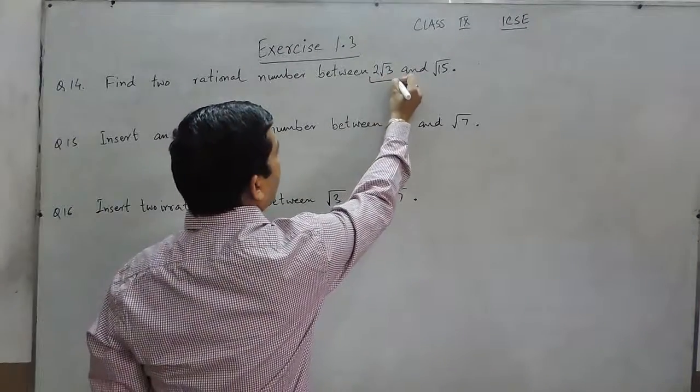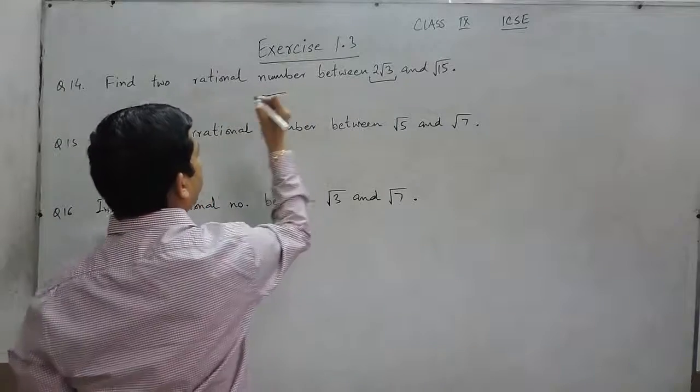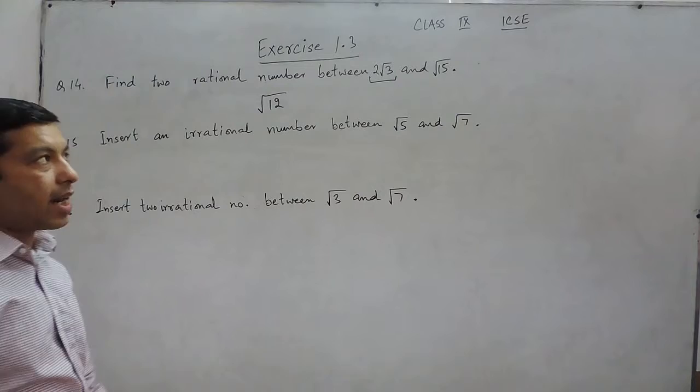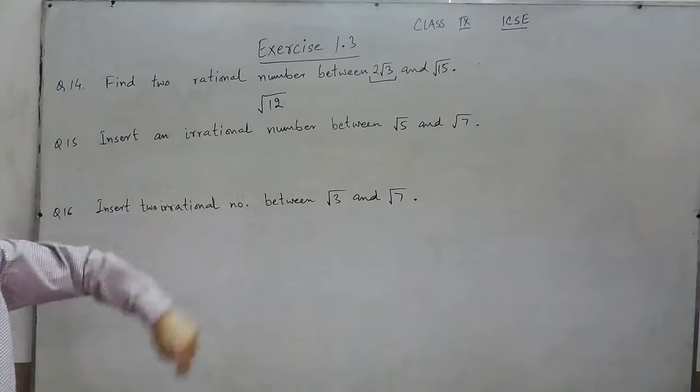So when we talk about 2 root 3, it can also be written as under root of 12, because 2 can be written as under root of 4, and under root of 4 multiplied by under root of 3 will become under root of 12.